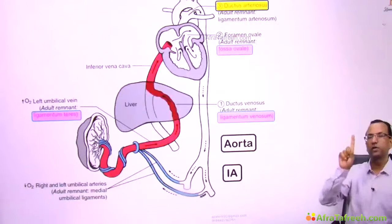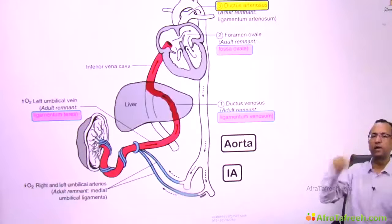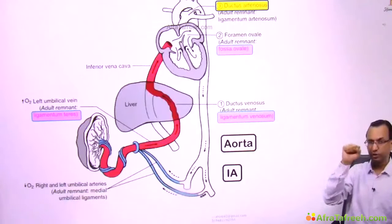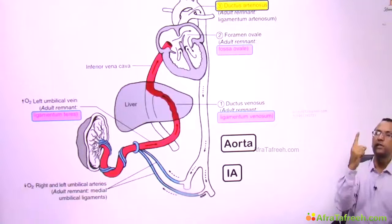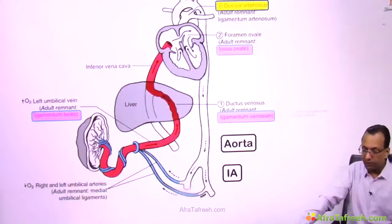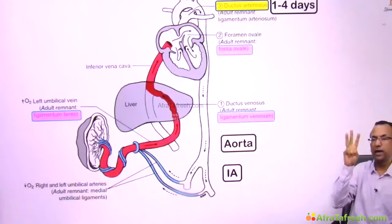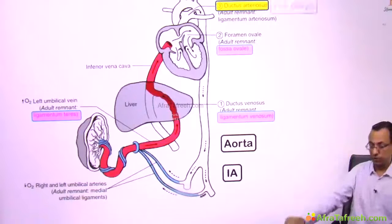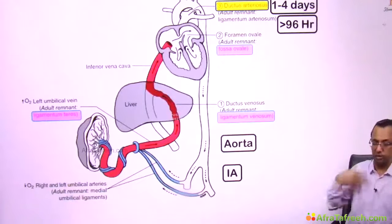The ductus arteriosus has two kinds of closure. The first is physiological closure — immediate vasospasm after birth. Different babies have this at different times: some in one day, others in two, three, or four days. The maximum time allowed is four days, which is 96 hours. If vasospasm has not occurred beyond 96 hours, medical intervention must be planned.